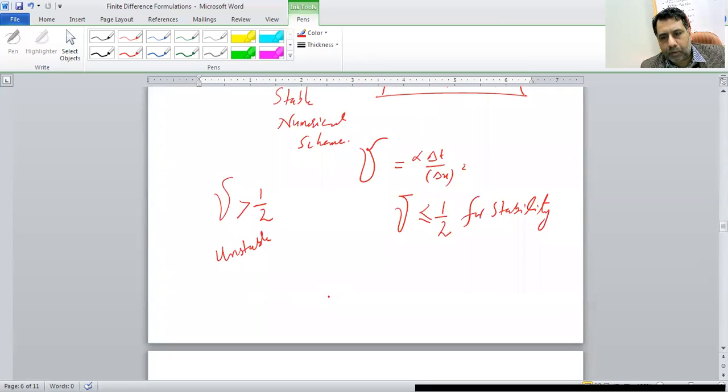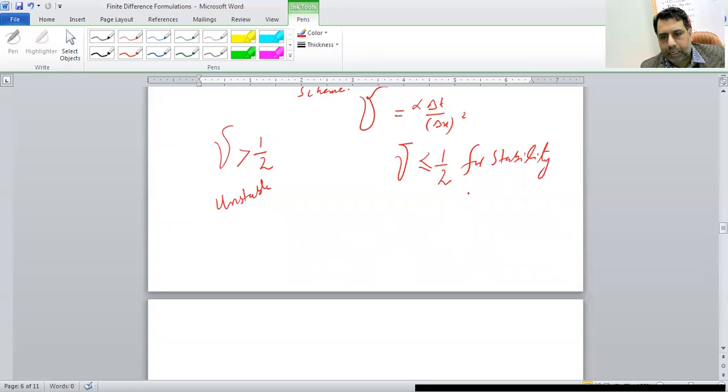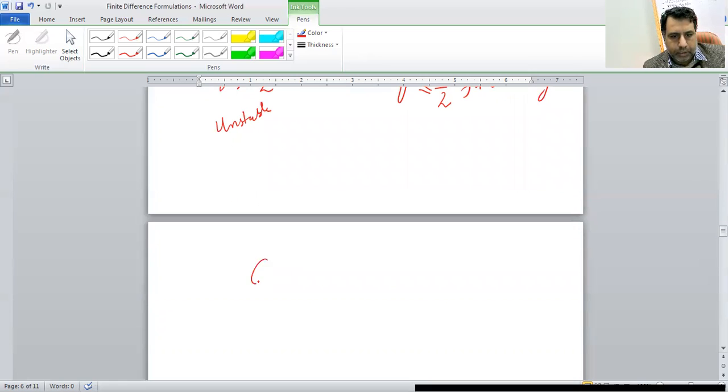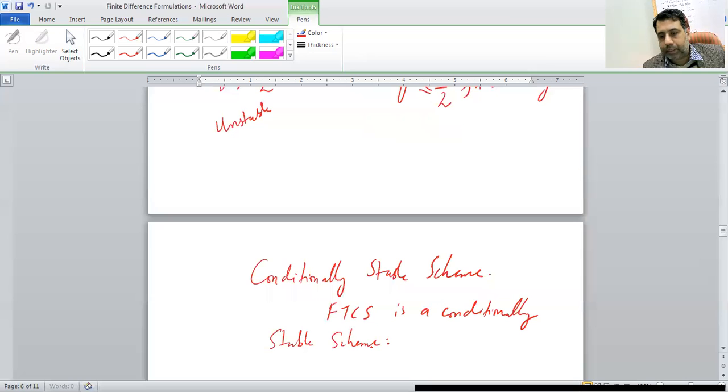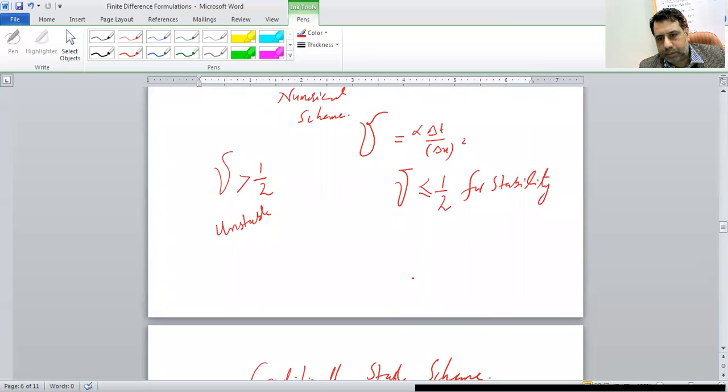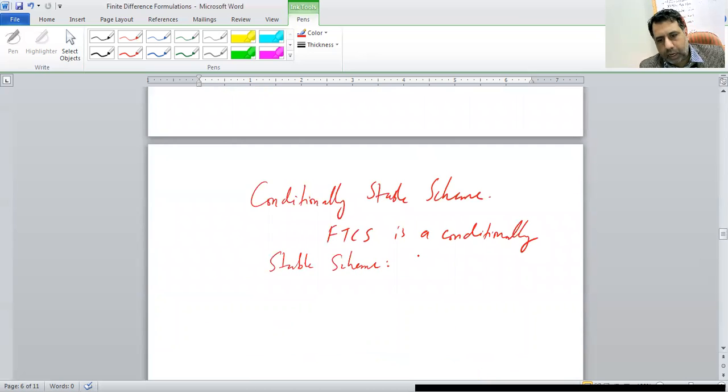A scheme which works only for some limited values of the selection of delta T and delta X, or for this combination that give rise to this condition, they are called conditionally stable schemes. So FTCS is a conditionally stable scheme. That means it will not work in every situation. Whenever you are writing a code and you are setting the parameters time step and space step, you need to consider this stability requirement. If this is not fulfilled, then the error will be growing from iteration to iteration and this scheme will be unstable, the solution will be unbounded.